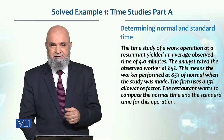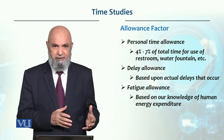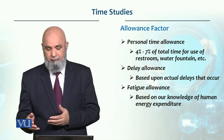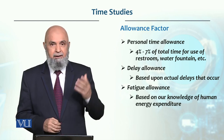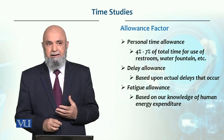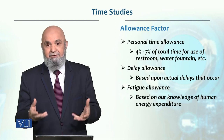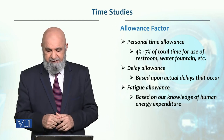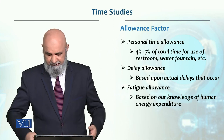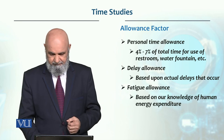इस case में 13% का allowance factor है। Personal time allowance जैसे मैंने बताया 4 to 7% होता है usually — for use of restroom, water fountain and all that। Delay allowance is based on actual delays — for example material time पर नहीं पहुँचा, tools time पर नहीं पहुँचे, electric breakdown हो गया। फिर fatigue allowance होता है — यह human energy expenditure के basis पर assess किया जाता है।